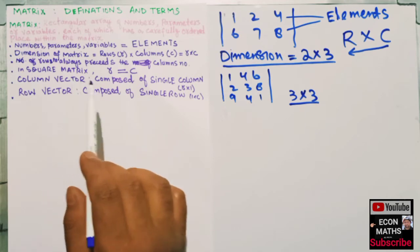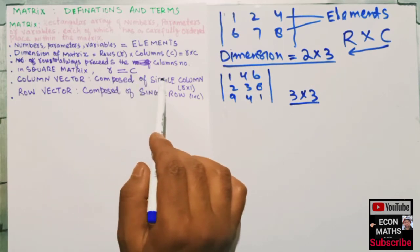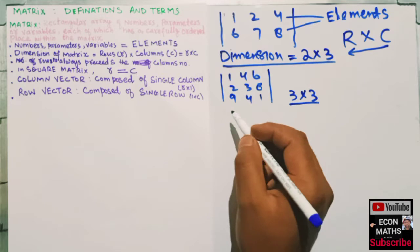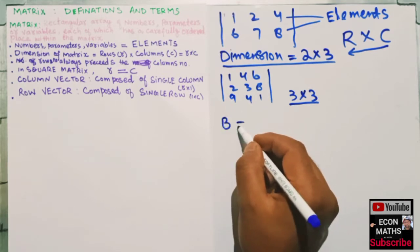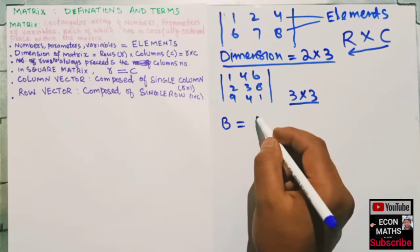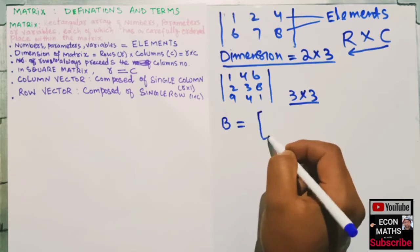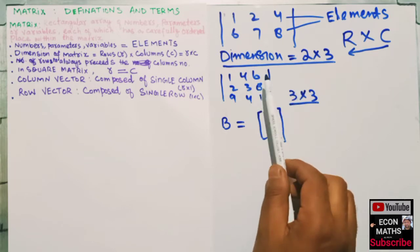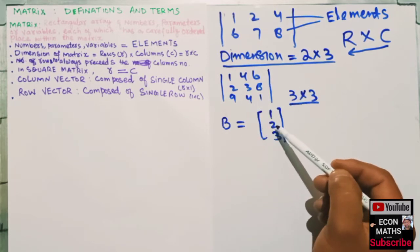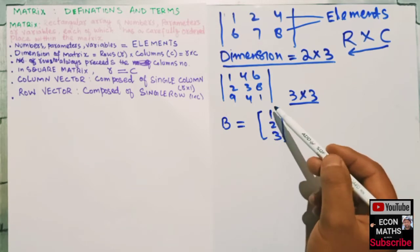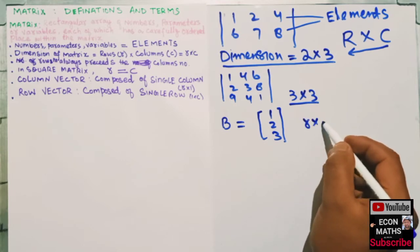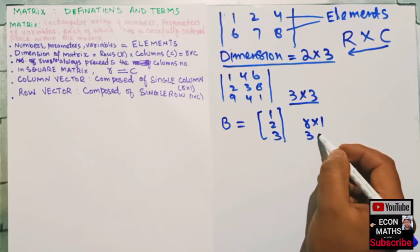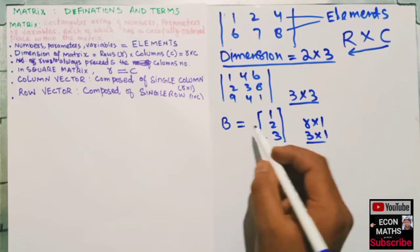A column vector is composed of a single column, and it is written as R cross one. For example, if matrix B has the elements one, two, three arranged in a single column, the number of rows is three but the number of columns is only one, so this is written as three by one. This is a column vector.